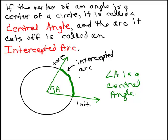Now this angle has its vertex right here. This point here is the vertex. It's in the center of a circle. When you have an angle where the vertex is in the center of the circle, it's called a central angle. So angle A is a central angle.